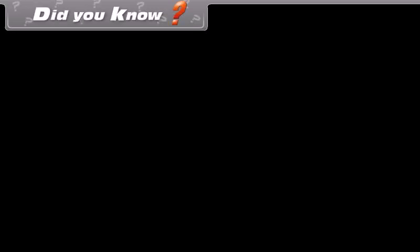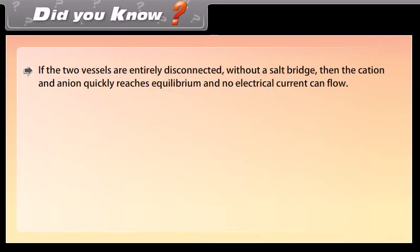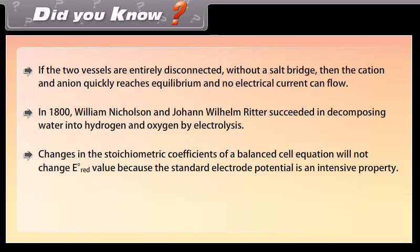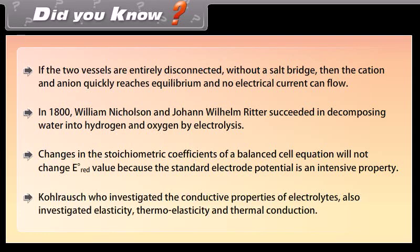Did you know: If the two vessels are entirely disconnected without a salt bridge, then the cation and anion quickly reach equilibrium and no electrical current can flow. In 1800, William Nicholson and Johan Wilhelm Ritter succeeded in decomposing water into hydrogen and oxygen by electrolysis. Changes in the stoichiometric coefficients of a balanced cell equation will not change the E° value because standard electrode potential is an intensive property. Kohlrausch, who investigated the conductive properties of electrolytes, also investigated elasticity, thermoelasticity, and thermal conduction.